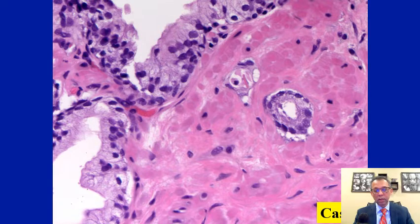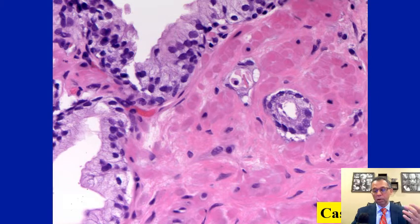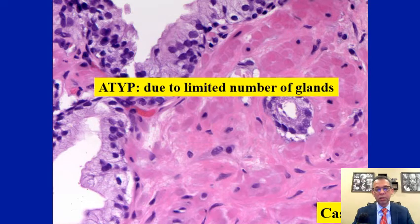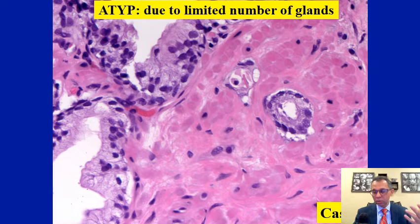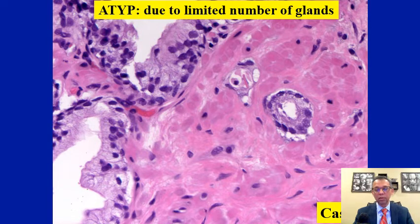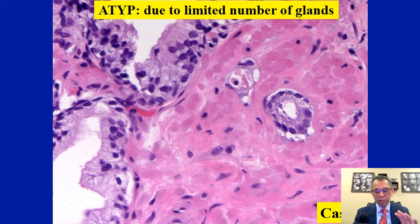Let us review case 1, which shows two cytologically atypical glands. These glands are clearly atypical but quantitatively not enough to call cancer. This is a result of atypia due to a limited number of glands. Most urologic pathologists typically require three or more glands to make a definitive cancer diagnosis. There is no magic number — it also depends on the overall architectural and cytological features present within the lesion. But in general, you would like to have at least three glands to make a comfortable cancer diagnosis if the lesion otherwise shows good major features of cancer.